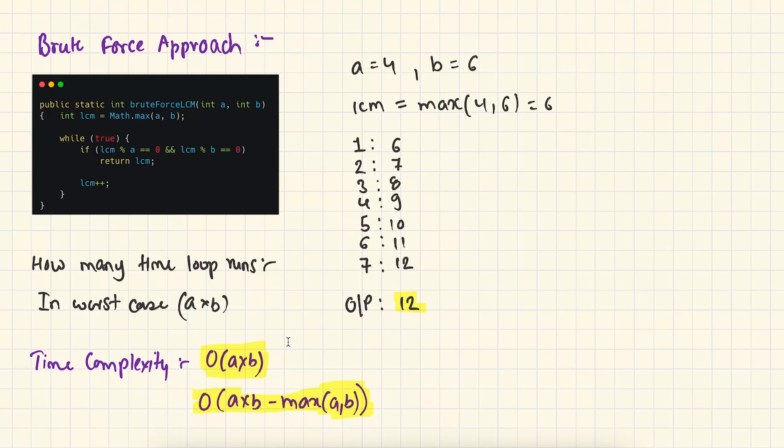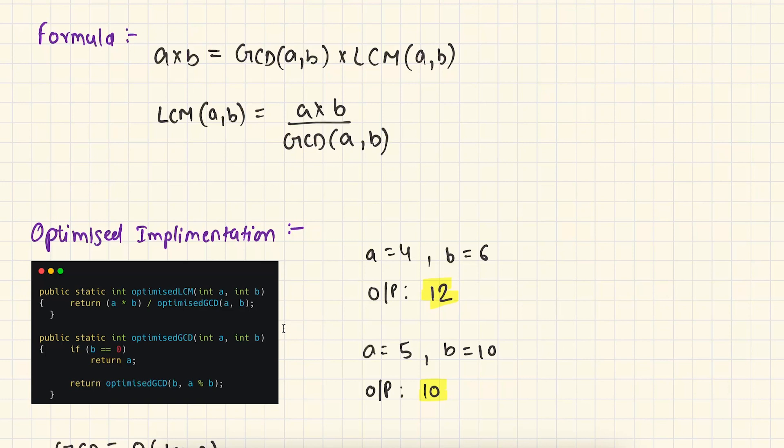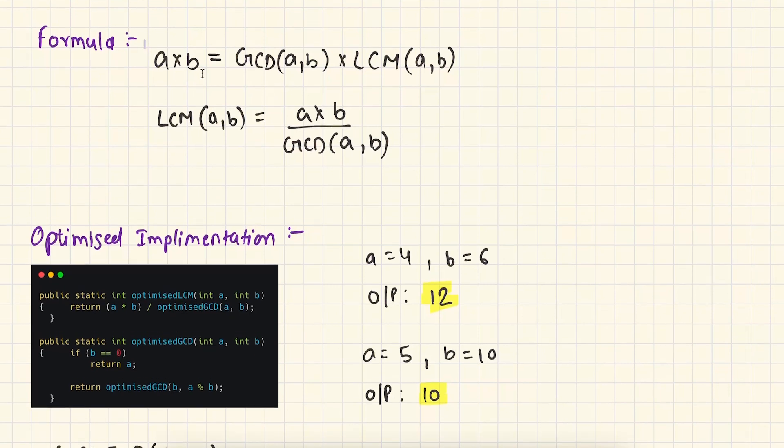This is a brute force approach, but we know that we always optimize the brute force approach. Here also we have some strategy to optimize this code. The optimization of this code is based on this formula: A times B is equal to GCD of A and B times LCM of A and B. Here we can count A times B easily, and we also know how to find GCD of A and B. In the previous video, we learned how to find GCD of two numbers. So by using this formula, we can simply calculate the LCM of two numbers. That is A times B divided by GCD of A and B.